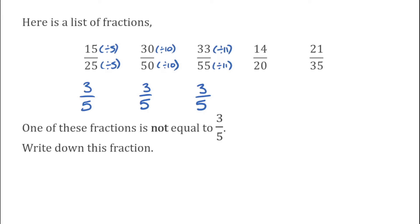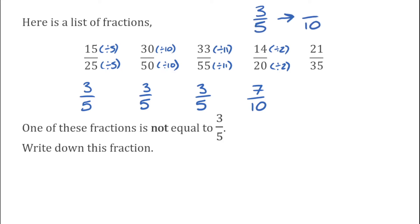For our next one we've got 14 over 20. The highest common factor of 14 and 20 is 2. So dividing the top by 2 gives us 7, and 20 divided by 2 gives us 10. So it looks like we've found our odd one out — this fraction is equivalent to 7 tenths, which is not the same as 3 fifths. To find the equivalent fraction to 3 fifths over tenths, we'd double the bottom and top, giving 6 tenths. So that's going to be our odd one out.